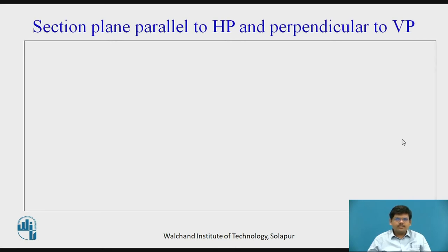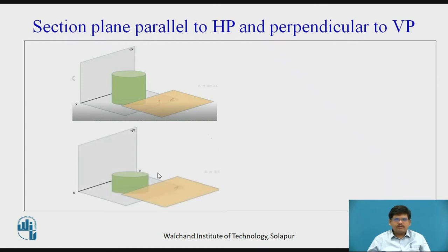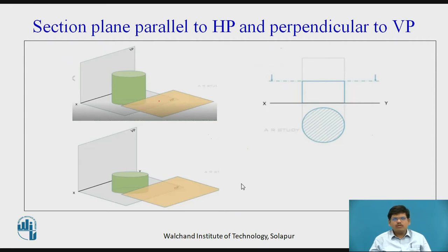The first condition: section plane parallel to HP and perpendicular to VP. This is the condition as it looks on screen. This is your solid — a cylinder resting on HP on its base with axis perpendicular to HP and parallel to VP, that is exactly vertical. The yellow portion you can see on the screen is your cutting plane. When it has been cut, you can see the upper portion has been removed. The plane is parallel to HP and perpendicular to VP.